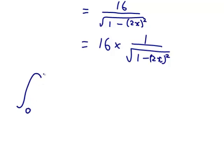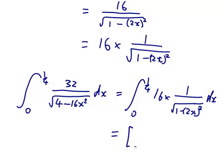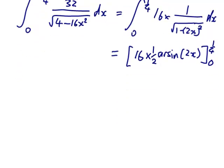So the integral from 0 to a quarter of 32 over the square root of 4 minus 16x squared dx is the integral from 0 to a quarter of 16 times 1 over the square root of 1 minus 2x all squared dx. So the 16 will stay there and all of this will integrate to give arcsine of 2x. But because it's 2x and that's just constant times x, I'm going to have to divide by the 2. So I've got 0 to a quarter of that.